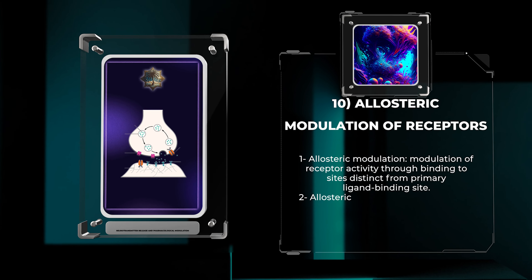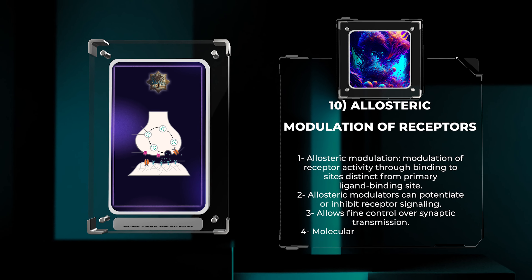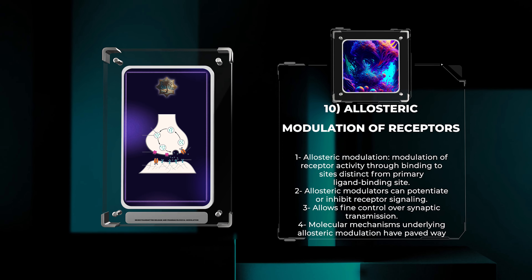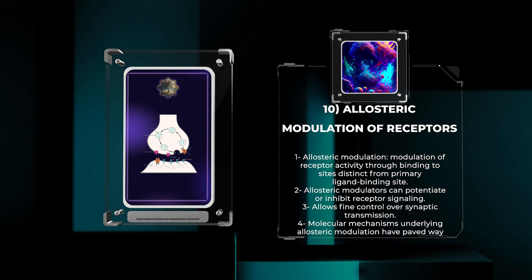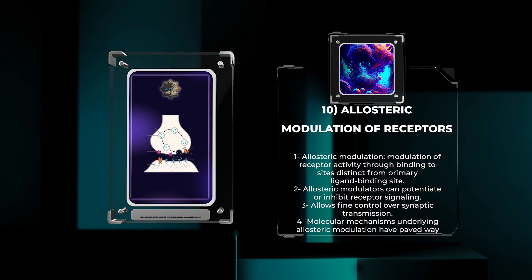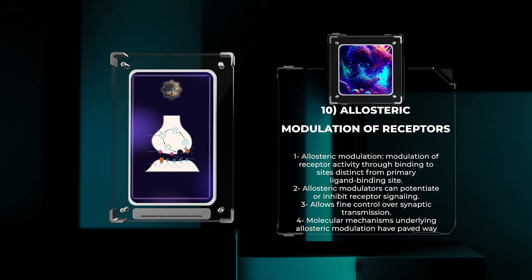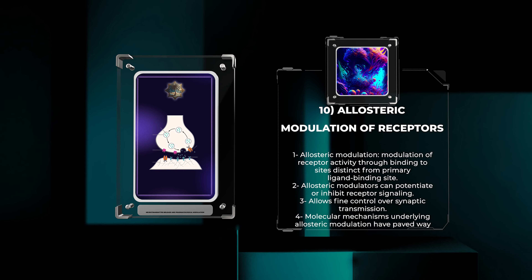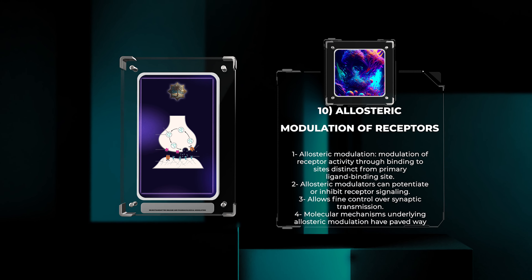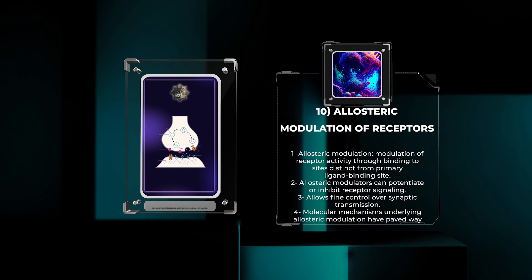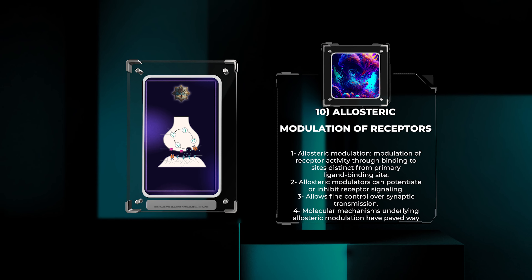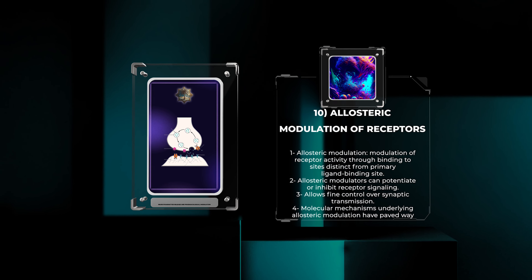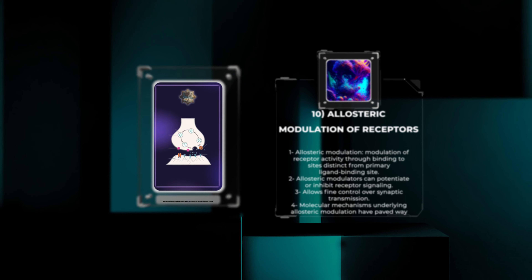Allosteric modulation refers to the modulation of receptor activity through binding to sites distinct from the receptor's primary ligand binding site. Allosteric modulators can potentiate or inhibit receptor signaling, allowing fine control over synaptic transmission. Understanding the molecular mechanisms underlying allosteric modulation has paved the way for the development of novel pharmacological agents with increased specificity and reduced side effects.